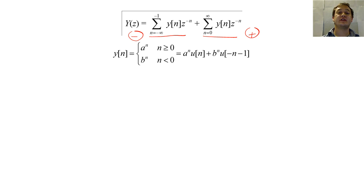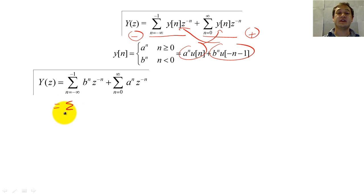Let's also suppose that our sequence Y of N takes this form. To calculate the two-sided Z-transform, let's invert our B-sequence so that it looks like a normal Z-transform.